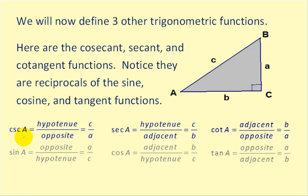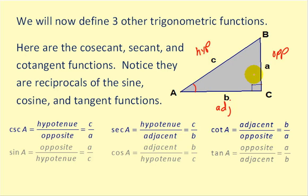Cosecant A would be the ratio of the hypotenuse to the opposite side — remember that sine was opposite over hypotenuse. The secant of A would be hypotenuse over adjacent, which is the reciprocal of adjacent over hypotenuse, which is cosine. And cotangent is adjacent over opposite, while tangent is opposite over adjacent. All referring to angle A: the hypotenuse is C, A is the opposite, and B is the adjacent. So cosecant A is C over A, secant is C over B, and cotangent is B over A.